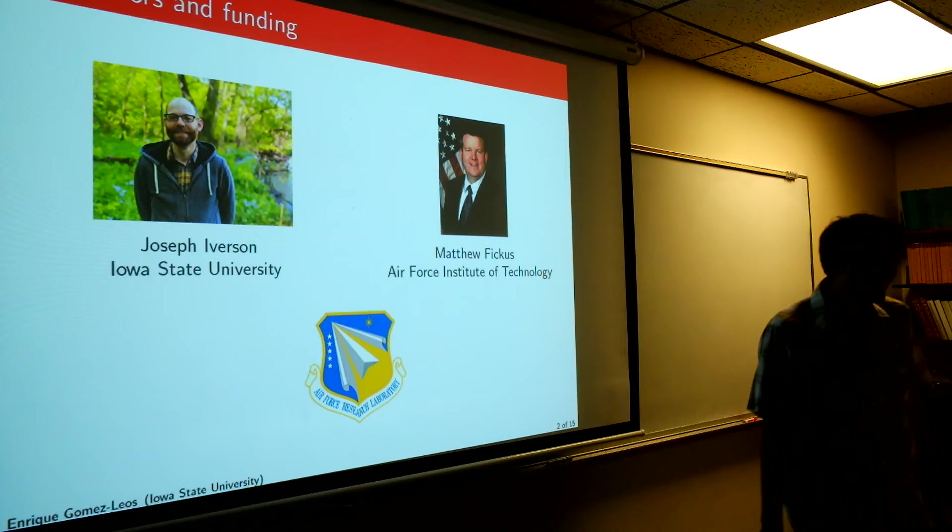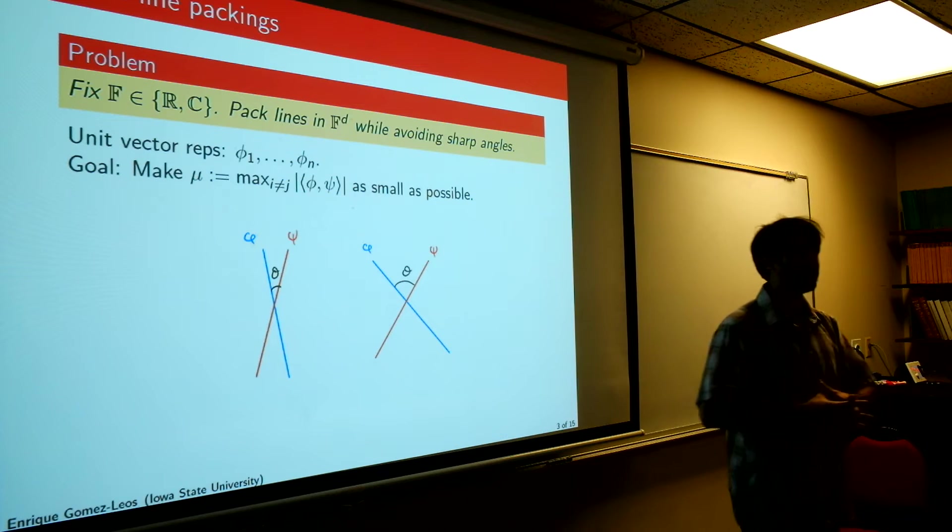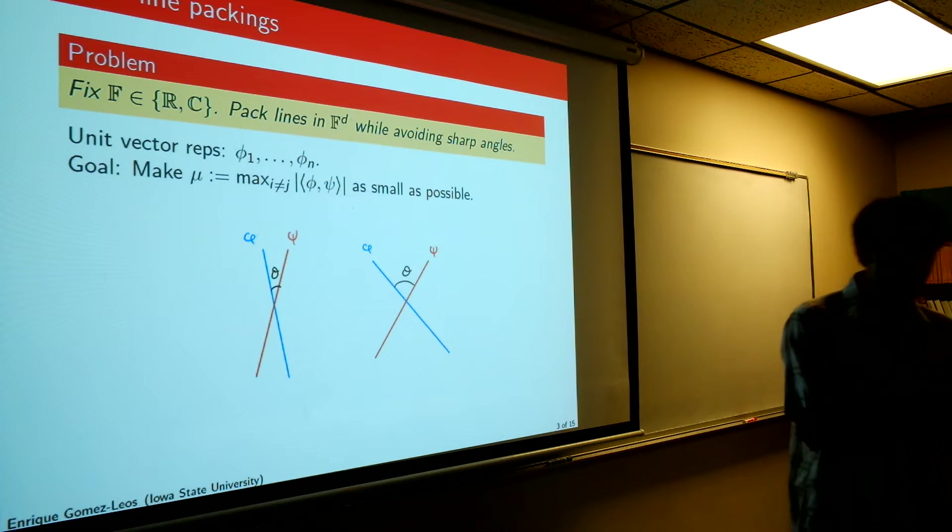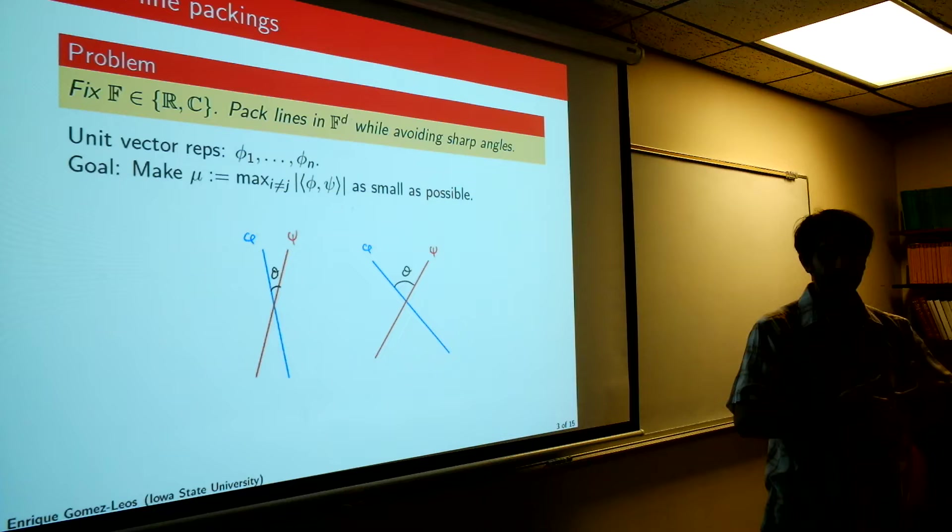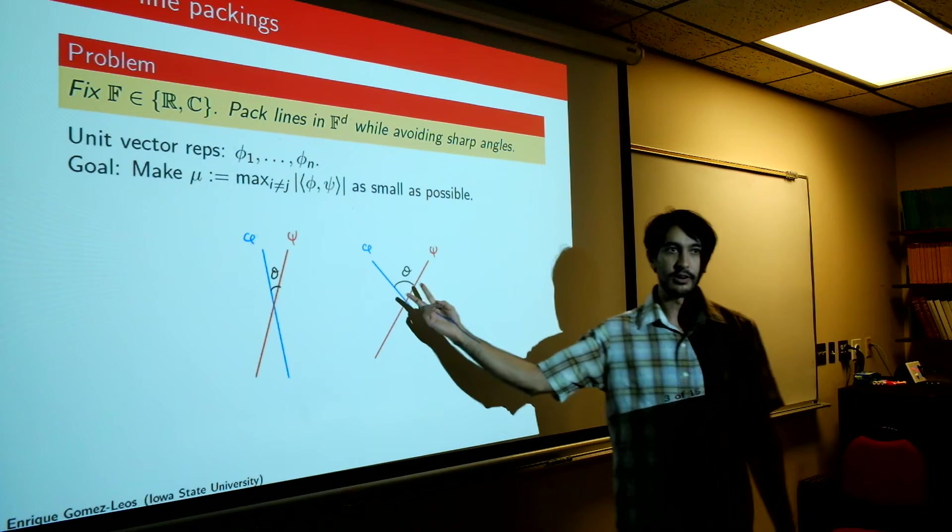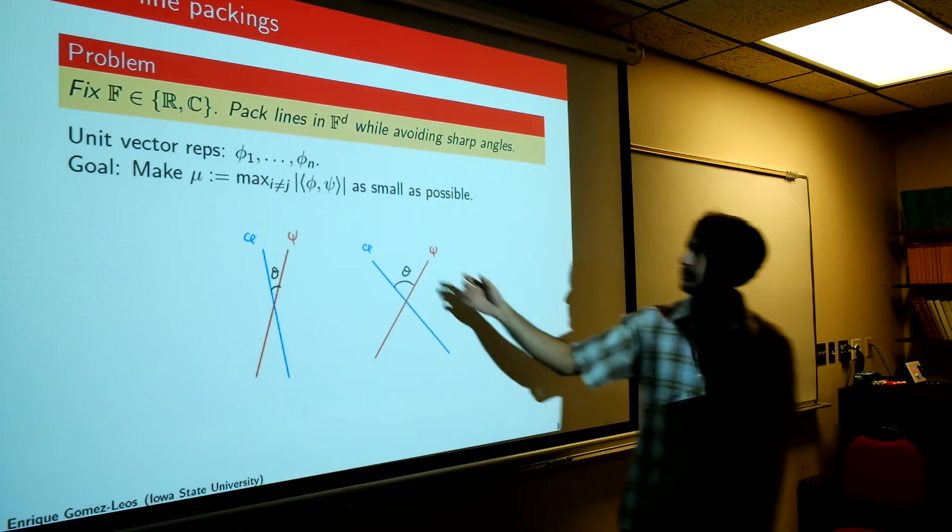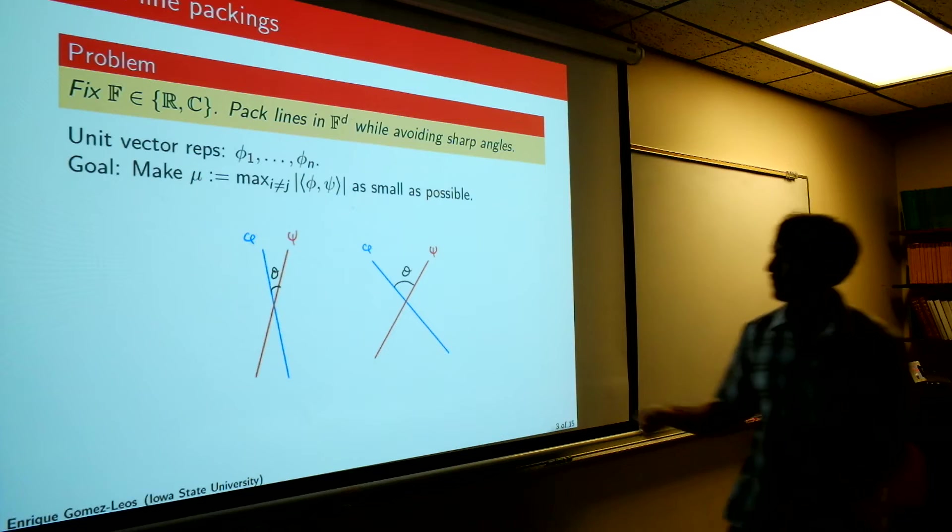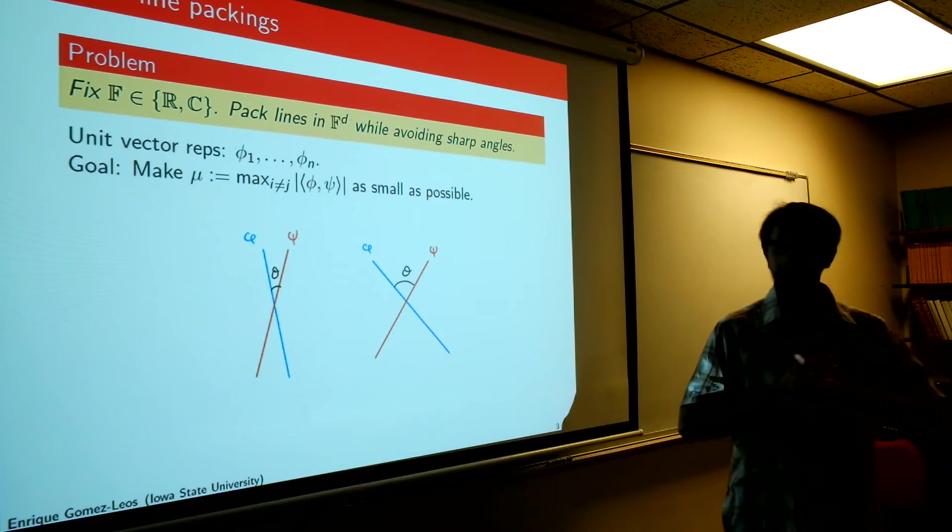So this is research I'll be talking about that was conducted over the course of this past summer at Dana-Ohio. I was invited by Joey Iverson over there and Matt Vickis of Air Force Institute Technology. This problem takes origin in understanding optimal subspace packings. So in this problem you imagine you're sitting in a high dimensional vector space, take the reals or the complex, and you have these n lines arranged in such a way so that you want to minimize the sharpest angle between them. So the goal is to make the sharpest angle as small as possible.